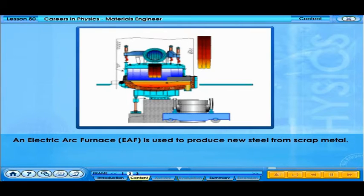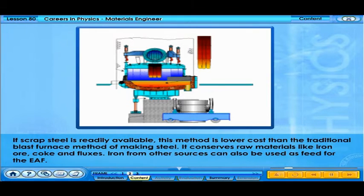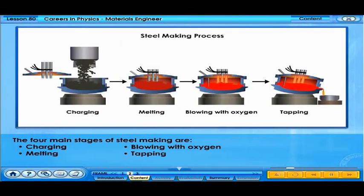An electric arc furnace, EAF, is used to produce new steel from scrap metal. If scrap steel is readily available, this method is lower cost than the traditional blast furnace method, and it conserves raw materials like iron ore, coke and fluxes. Iron from other sources can also be used as feed for the EAF.